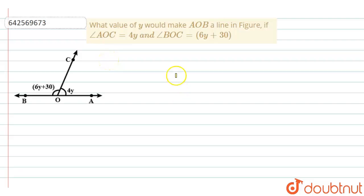The question says, what value of y would make AOB a line in figure if angle AOC is equal to 4y and angle BOC is equal to 6y plus 30?